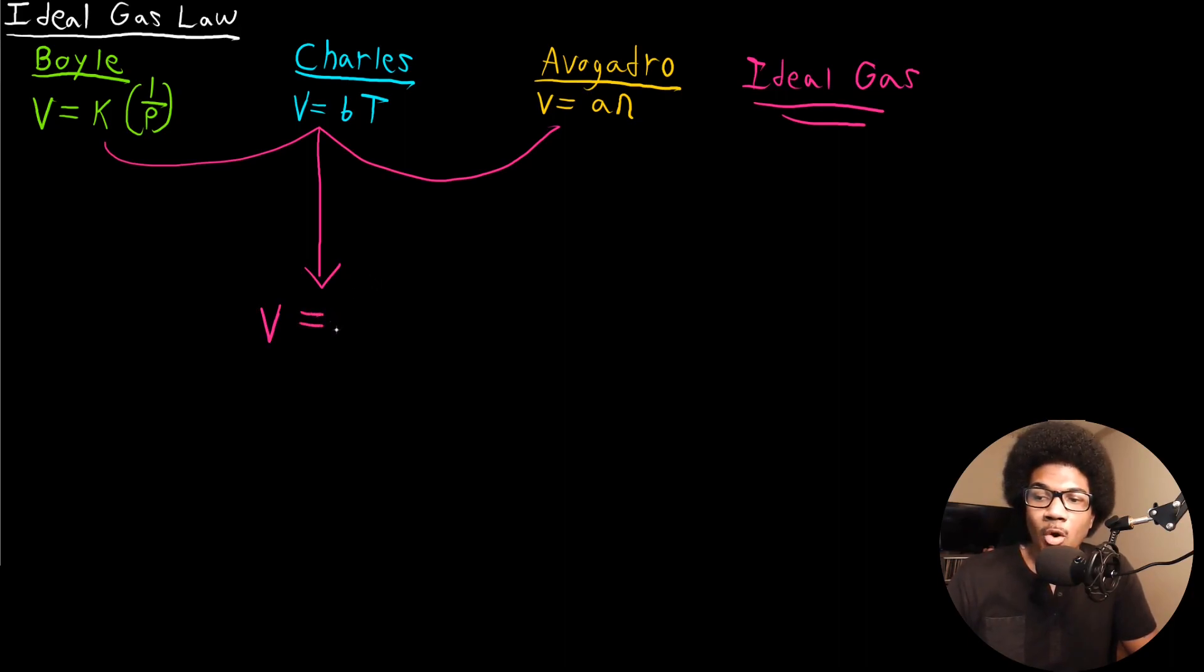We'll call it R and I'll go into more detail about R in a second. Basically the volume is going to be equal to R times T times N over P. This maintains all of the proportionalities, all of the relationships that were observed in the fundamental gas laws and puts them in one single unifying equation.